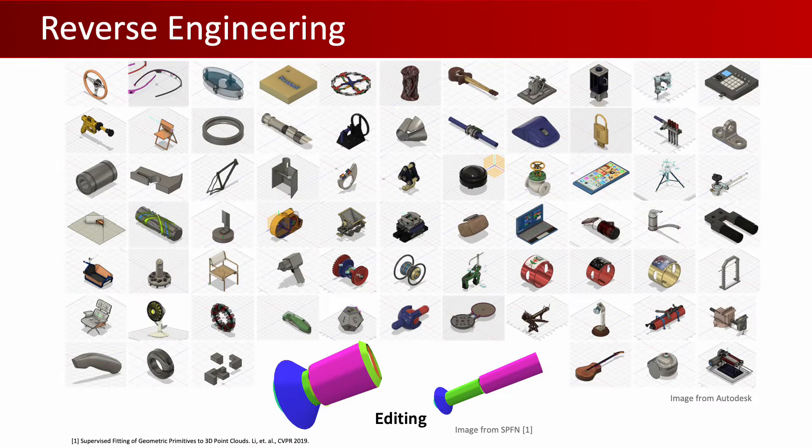Our everyday environments are filled with objects fabricated following a carefully engineered computer-aided design. This makes reverse engineering from raw geometry to a CAD model an essential task that enables manipulation of 3D data in shape-editing software, thus expanding their usages in many downstream applications.